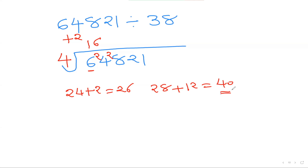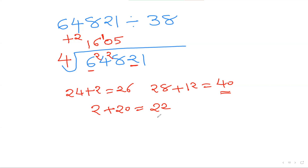Now we have 40 and we divide by 4, which gives 10. But we can't put a two-digit number in one place, so I put 0 here and carry the 1 to deal with later. 4×10=40, no remainder. I'm left with digit 2, but 10×2=20 must be added, giving 22. With 22: 4×5=20, remainder 2, giving 21.